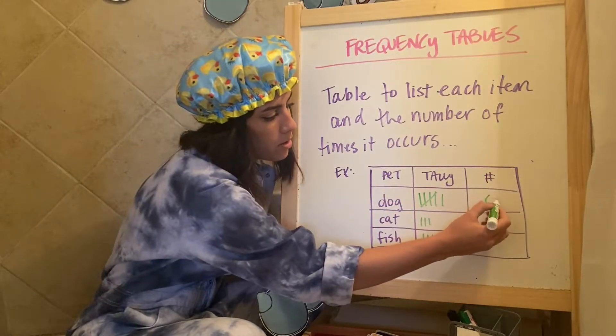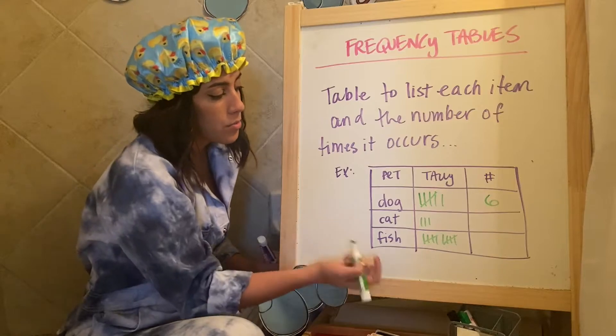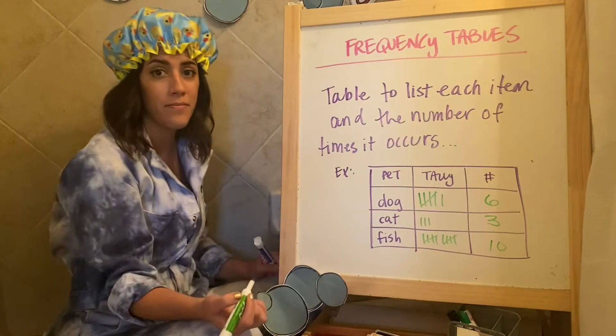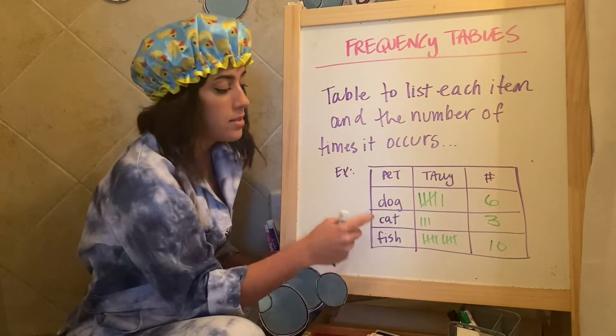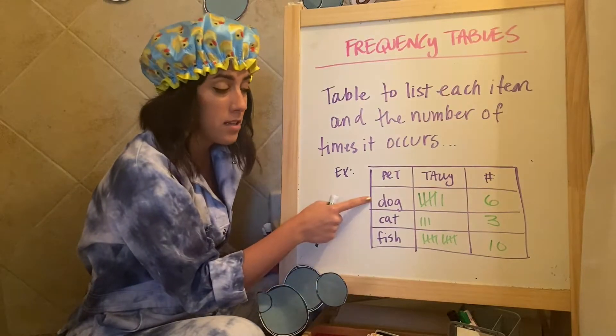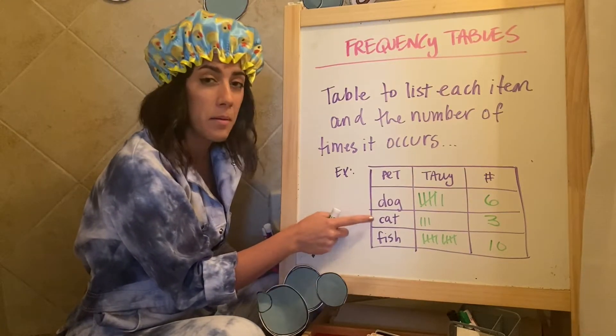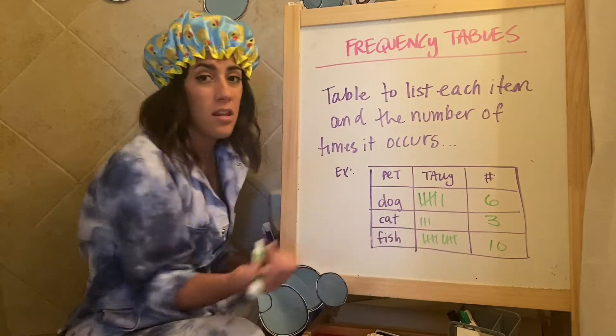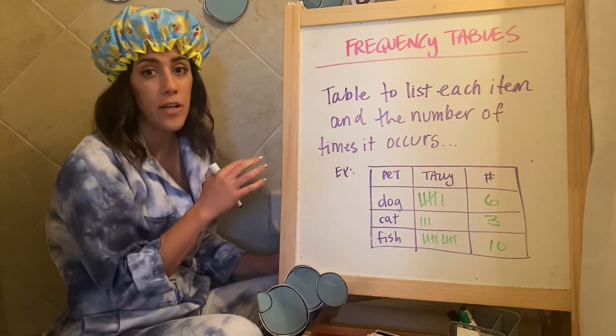I ended up coming back and I had six people that had dogs. I made tallies. So I put the number that were there. Three people had cats and 10 people had fish. That's it. That's a frequency table.